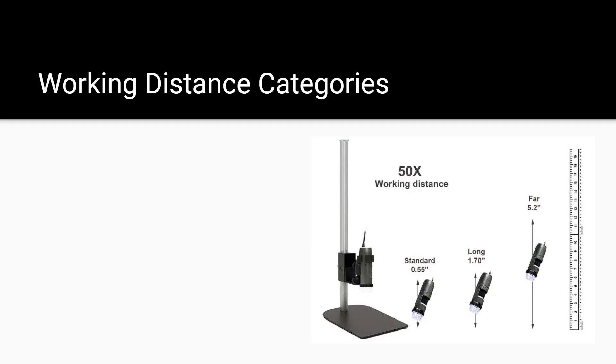Our microscopes come in three main working distance categories, which are standard, long, and far. Most of the models in these categories can focus to infinity, which means you can put them as far away from your subject as necessary in order to have enough room to use tools or move the subject around. The difference between them is how much magnification you can achieve at a distance. So, standard working distance models have a magnification range of 1 to 230 times, and at 50 times magnification, you will have a working distance of approximately half an inch.